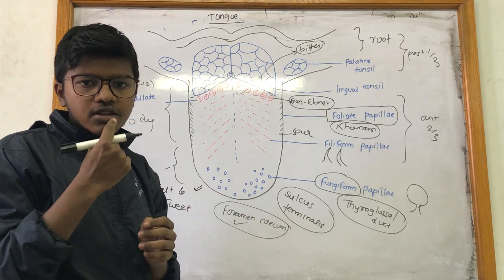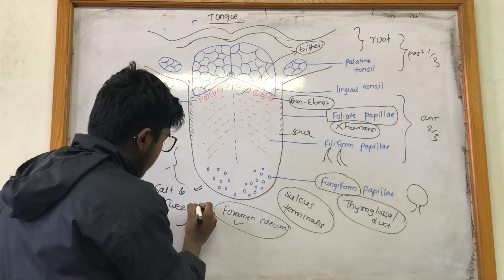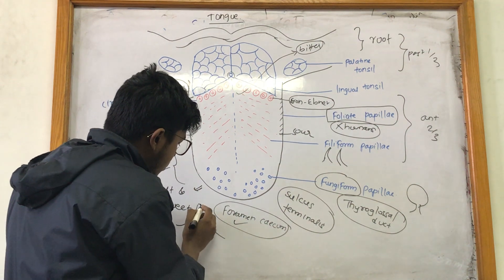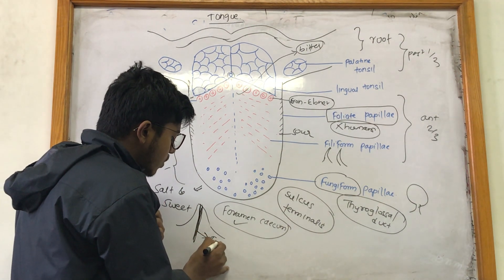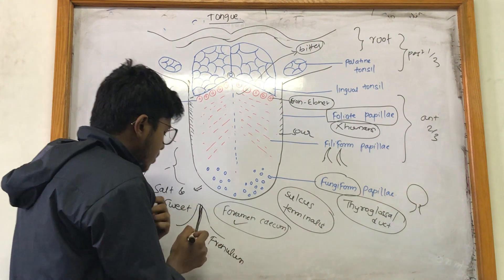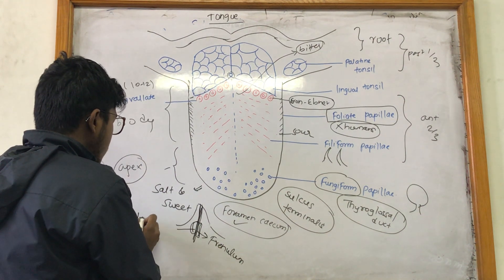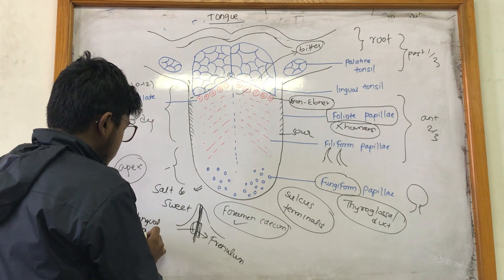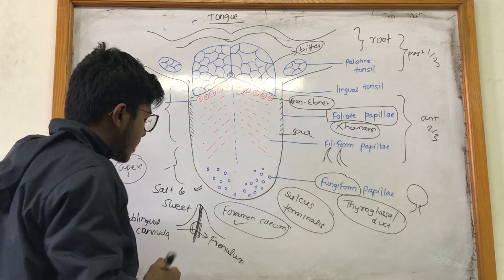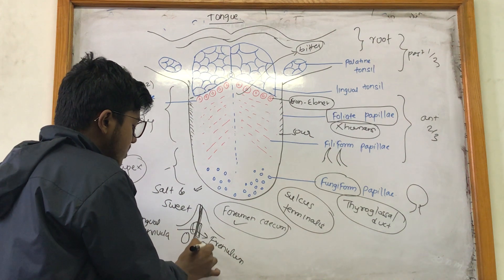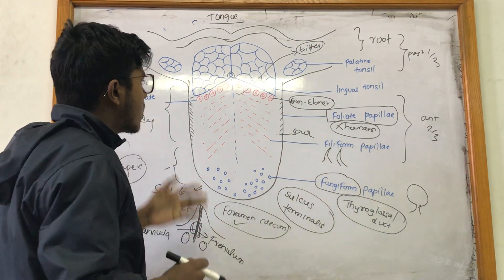The tongue has two surfaces: dorsal and ventral. On the ventral surface, the tongue is connected to the inner mucosa by a thread-like structure known as the frenulum. On the sides of the frenulum are two swellings called sublingual caruncles, which have the openings of the sublingual salivary glands. On the sides of the sublingual caruncles are the submandibular caruncles, which have the openings of the submandibular glands.